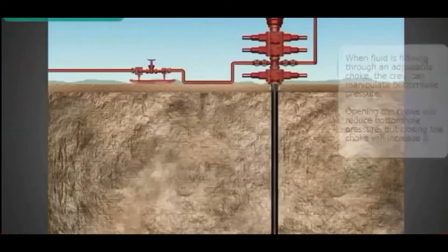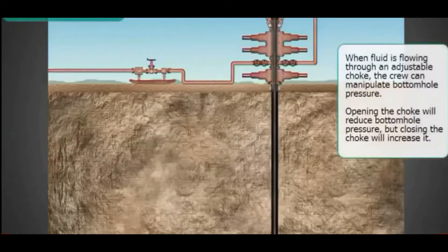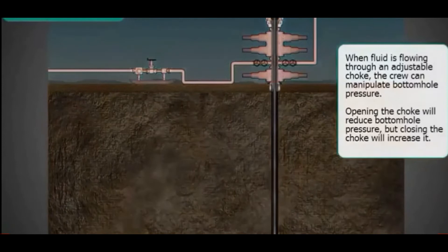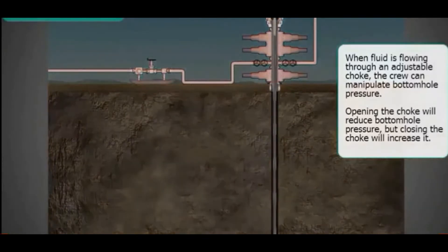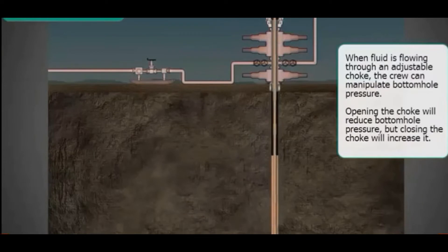When fluid is flowing through an adjustable choke, the crew can manipulate bottom hole pressure. Opening the choke will reduce bottom hole pressure, but closing the choke will increase it.